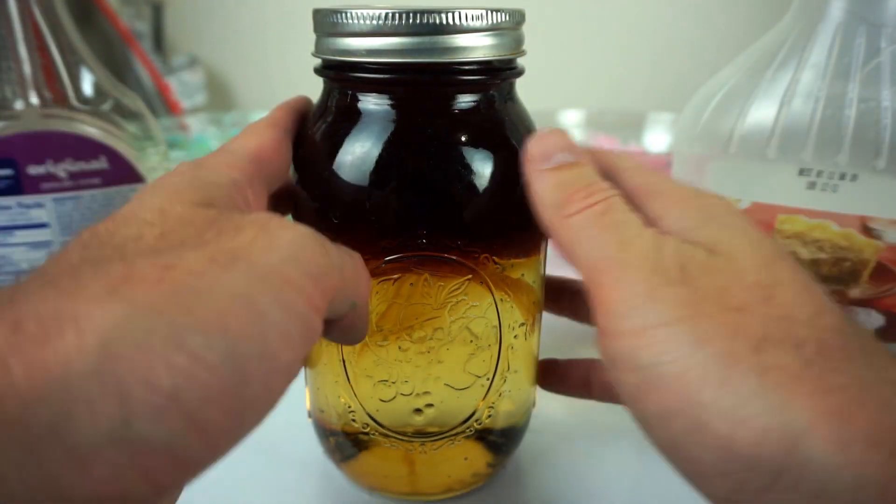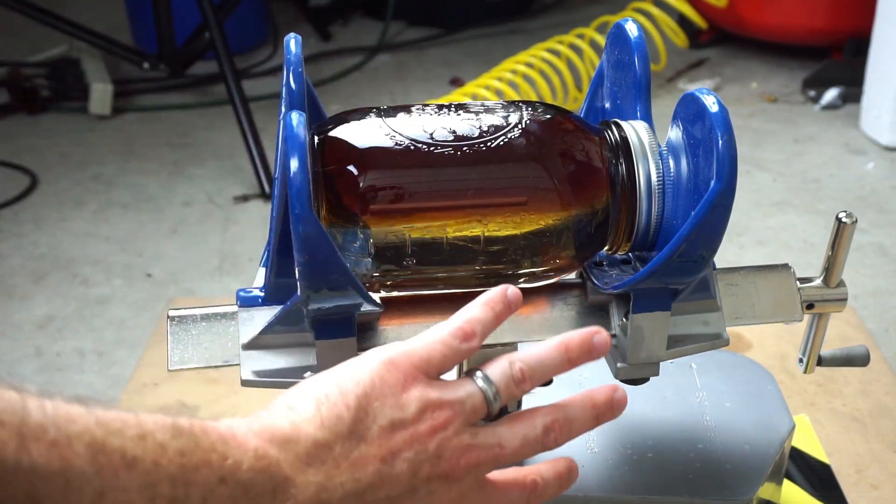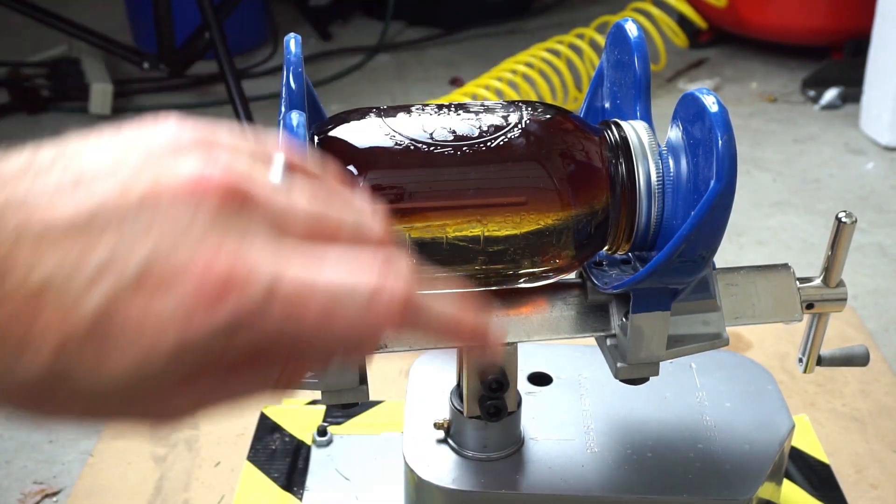Put it in our paint shaker and see what a Newtonian fluid looks like. Okay, you can see the darker syrup on the top and the lighter syrup on the bottom. Let's see if we can mix this up in the paint shaker.